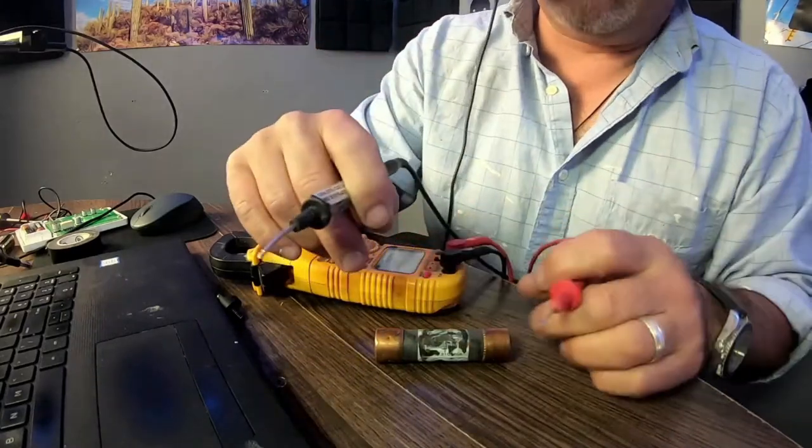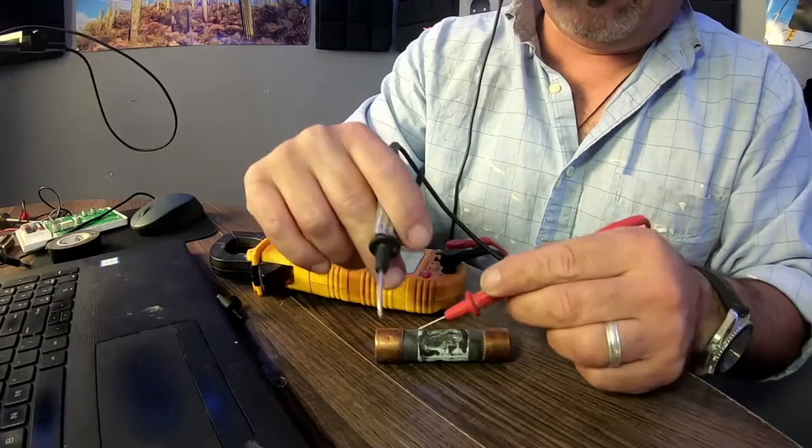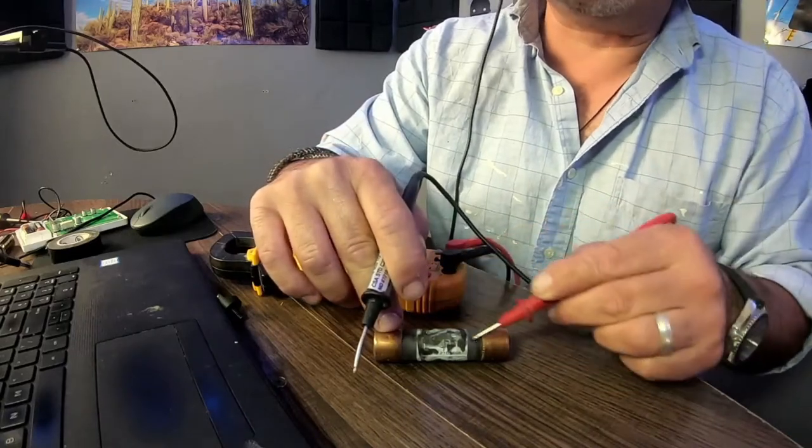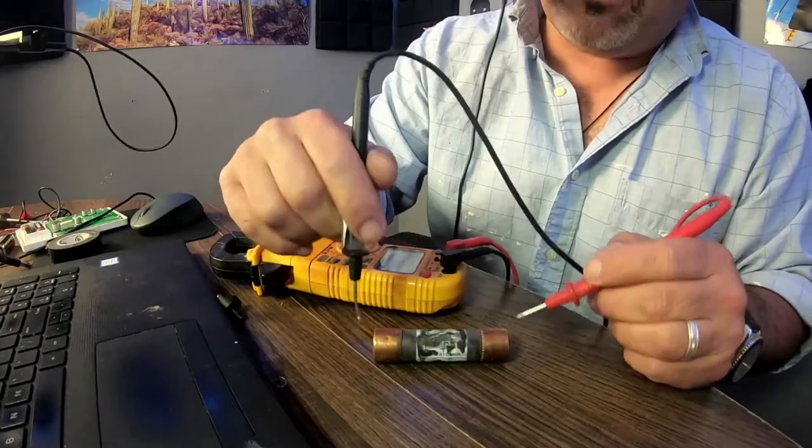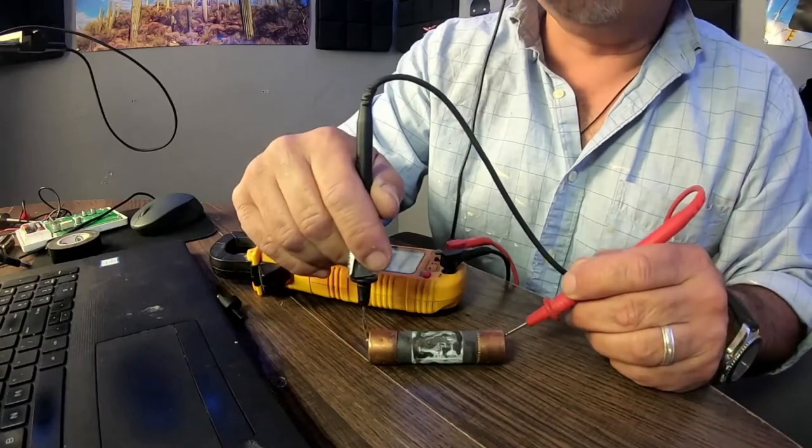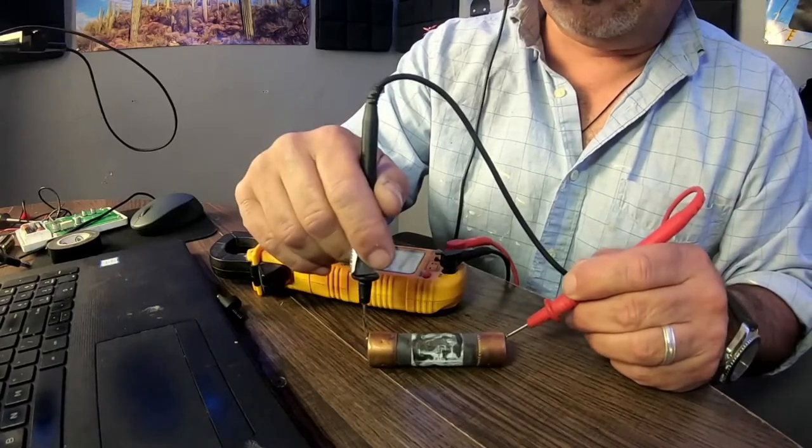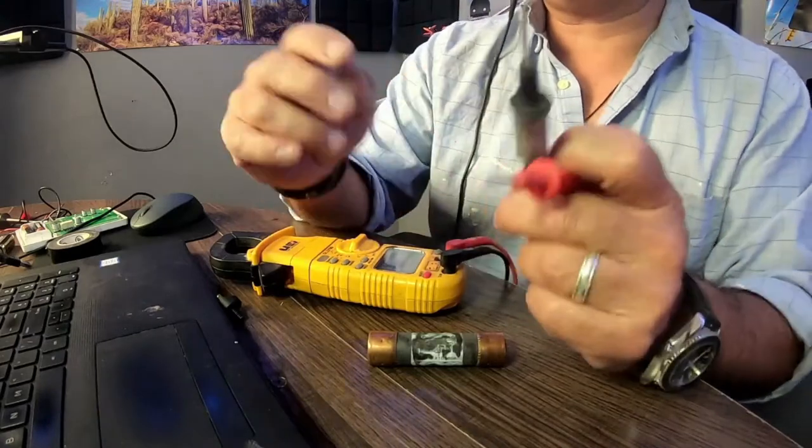So this is a good fuse, I already know that. What happens is it's still intact on the inside, so it'll still make contact. As long as it's making contact, it's still a good fuse. Of course it's beeping because it's good. So this is how you test it with a voltmeter.